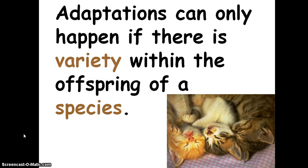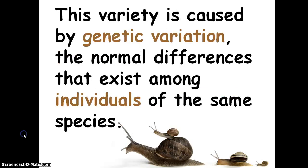Adaptations can only happen if there is variety within the offspring of a species. For the environment to favor one variety over another, those differences need to exist. This variety is caused by genetic variations — the normal differences that exist among individuals of the same species. For example, snails exist in all different sizes, and in certain environments it's good to be a small snail while in others it's good to be a large snail.